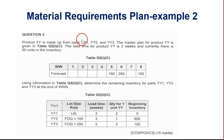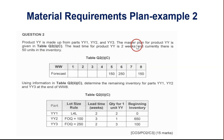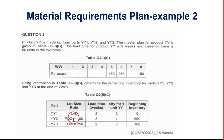Product YY is made of three types of child parts: YY1, YY2, and YY3. The forecast covers eight weeks, but forecast data is only available for weeks five, six, and eight. The lead time for YY is two weeks and the on-hand inventory is 50 units. For YY1, the lot size rule is lot-for-lot, so you buy any amount. For YY2, the lot size is 100 units — you buy in multiples of 100, 200, 300, etc. For YY3, the lot size is 250 units — you buy in multiples of 250, 500, 750, and so on.